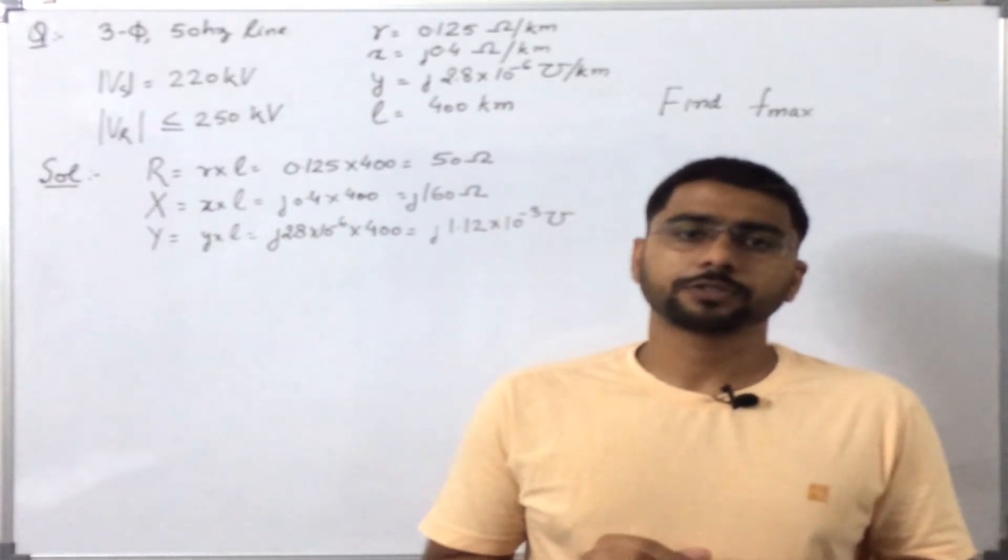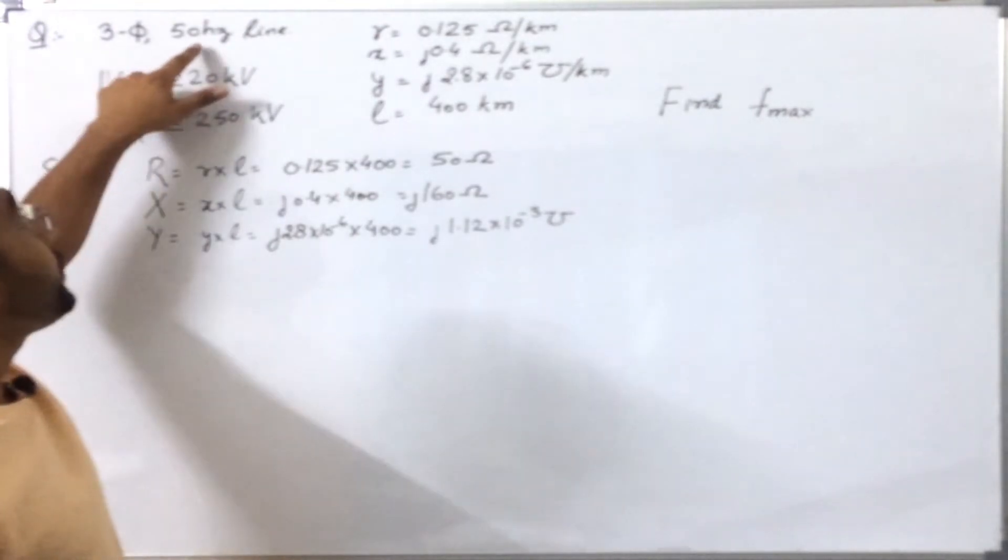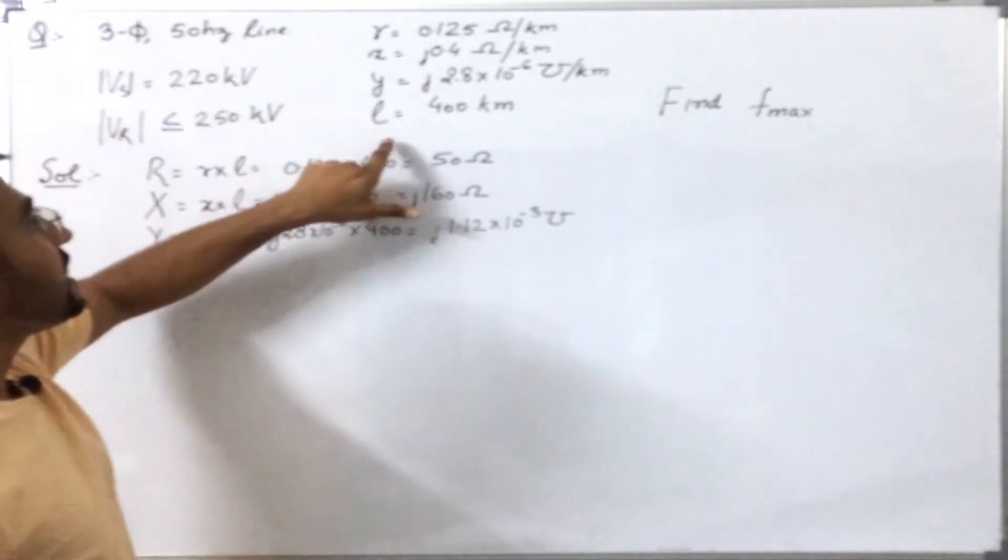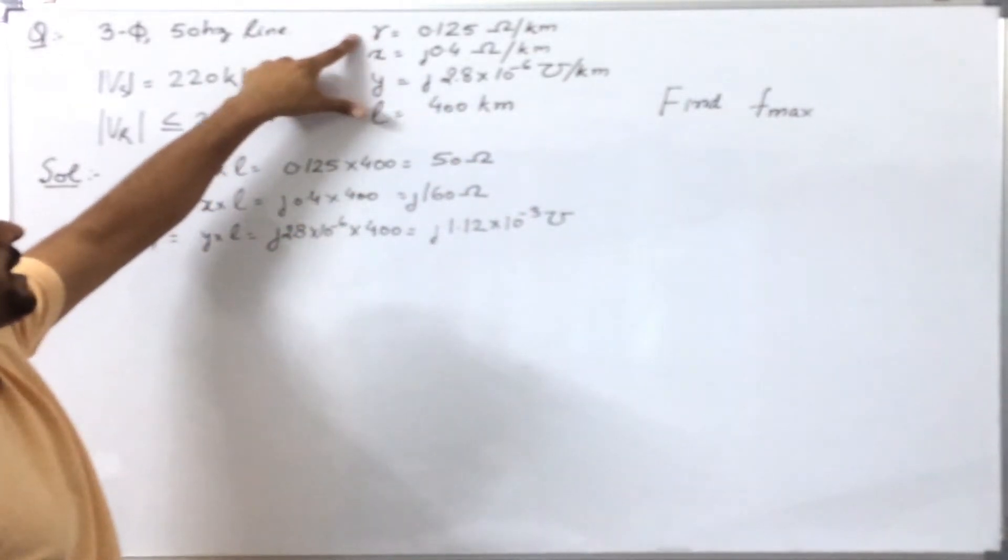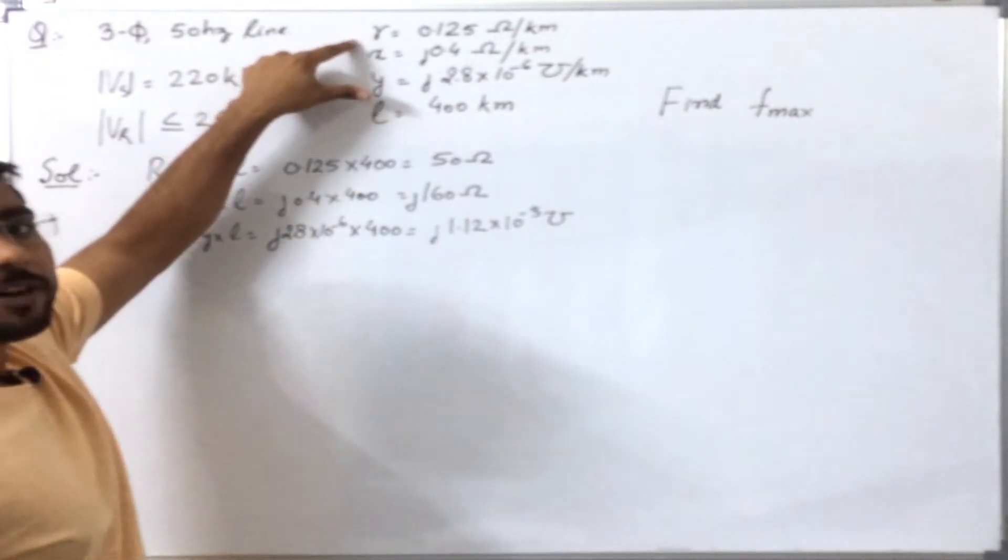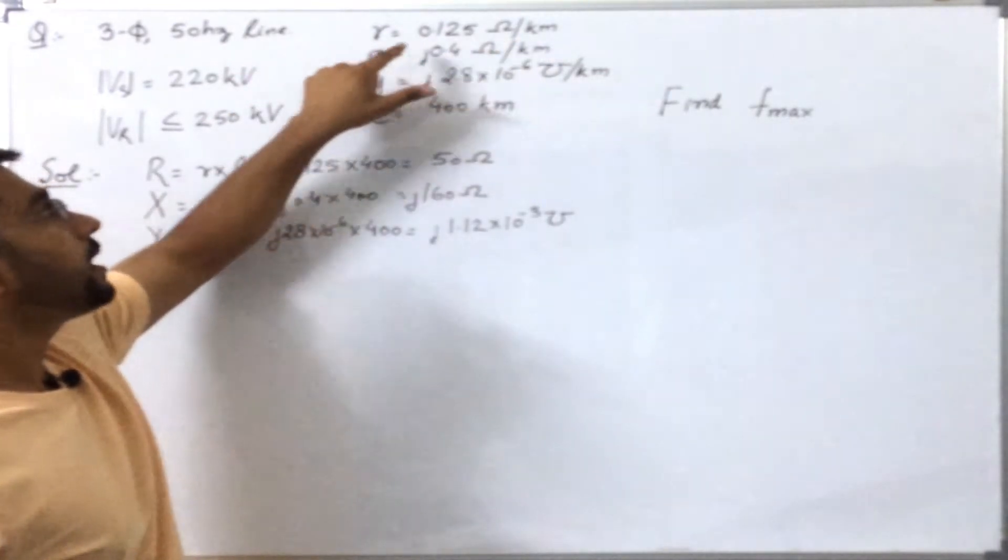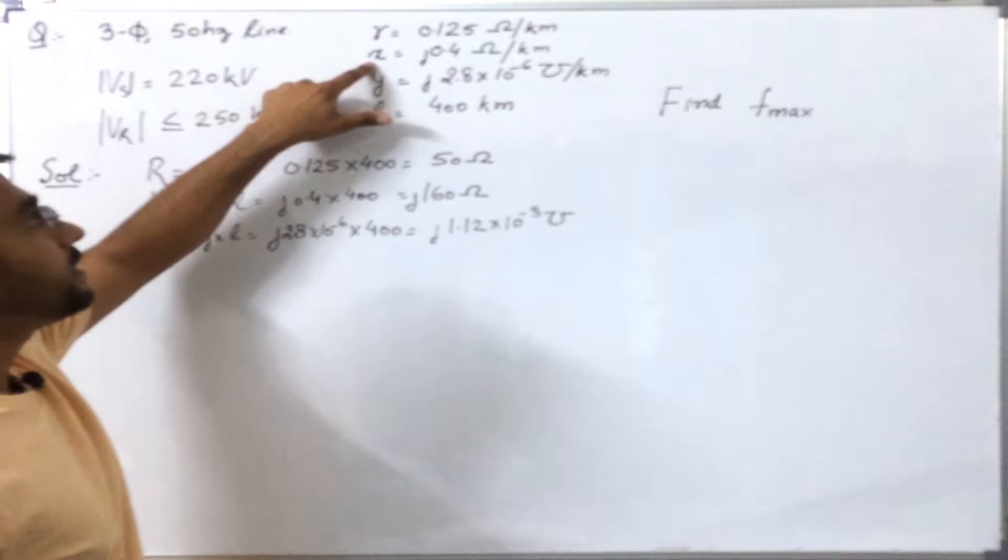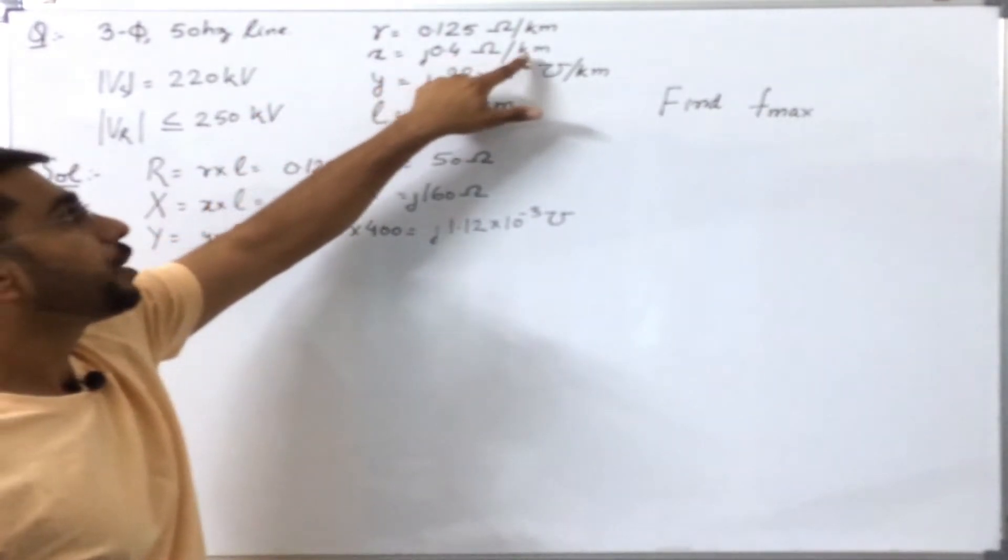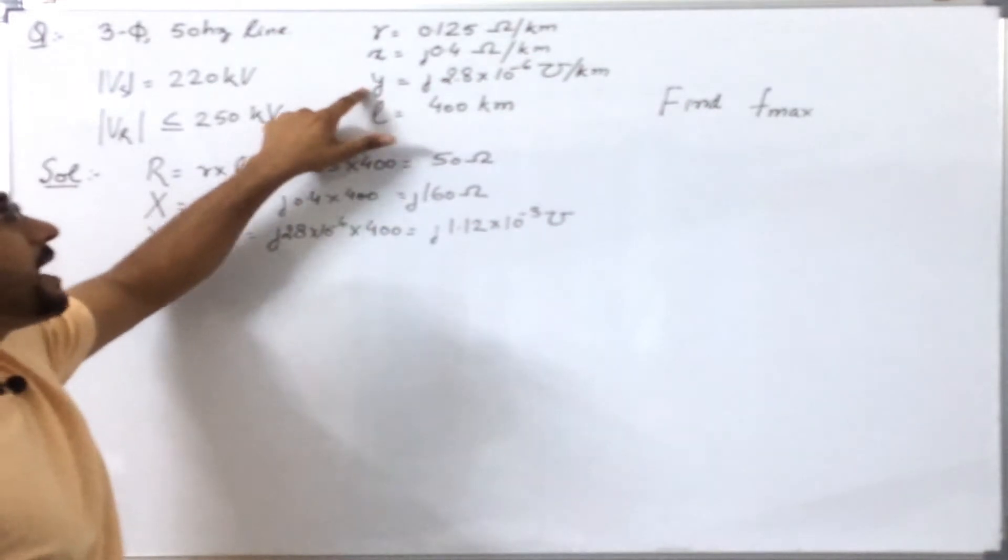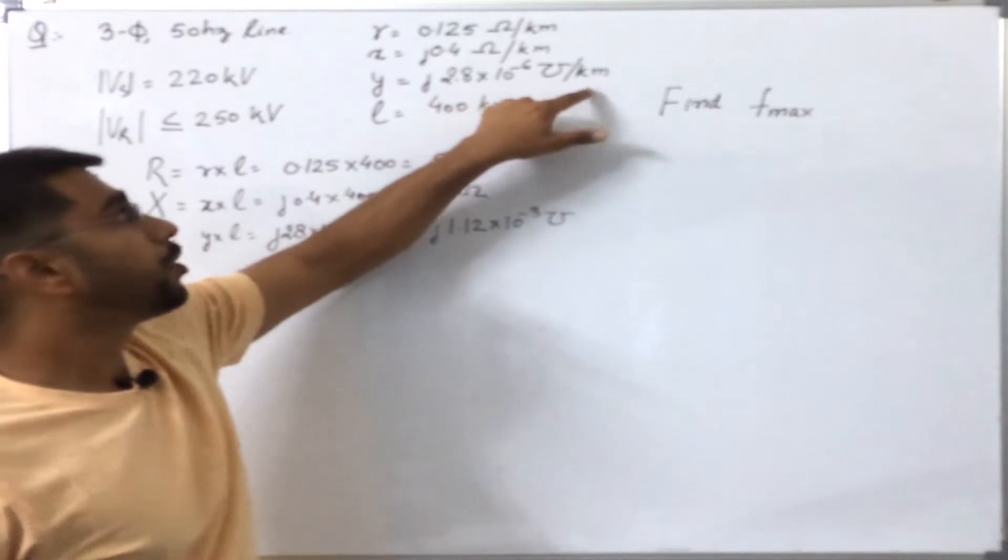Now let us see what is the question. We are given a three-phase 50 hertz transmission line whose length is 400 kilometers. Various parameters are: resistance per phase per unit length is 0.125 ohm per kilometer, the reactance or inductance part is 0.4 ohm per kilometer per phase, and the shunt admittance is 2.8 times 10 to the power minus 6 mho per kilometer.